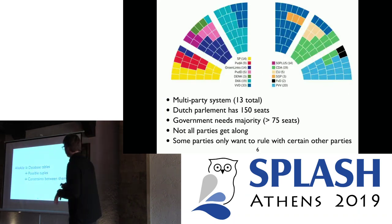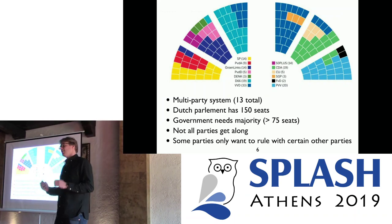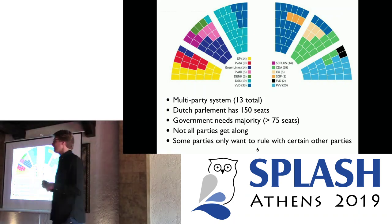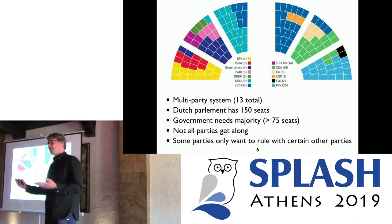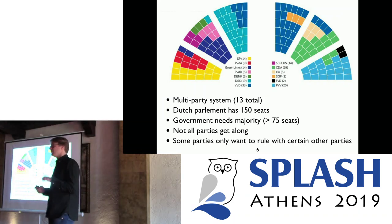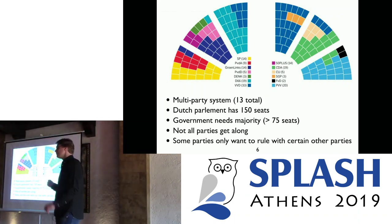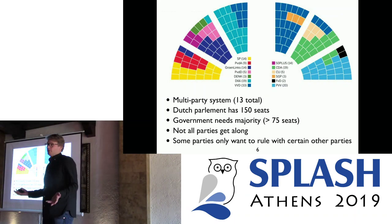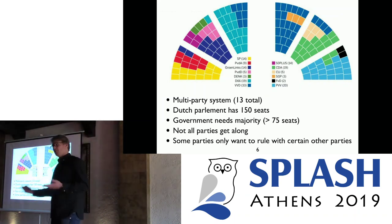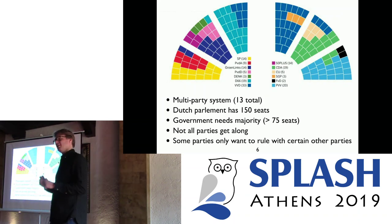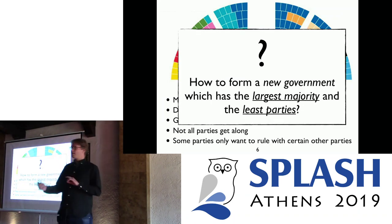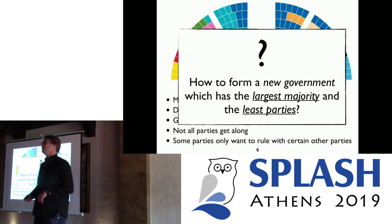Let's look at an example. Instead of the financial example, we turn to another exciting domain: politics. We use an example from Dutch politics, specifically the problem of choosing a new parliament. We had elections, and as some of you might know, the Netherlands has a multi-party system. In this case, 13 parties take part in parliament, and the parliament has 150 seats. To form a government, you need at least a majority. But of course, not all parties get along — so some nice relational constraints come in. And inversely, if some parties are going to rule, they want certain other parties to join them. So the question is: how can we form a new government with the largest majority but the fewest parties? Because the more parties, the harder it will be to rule the country.